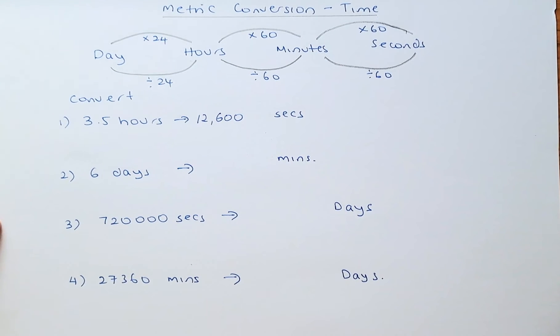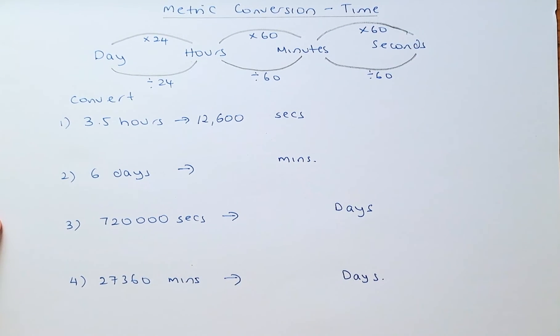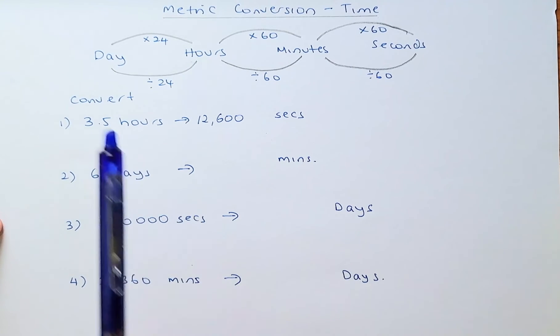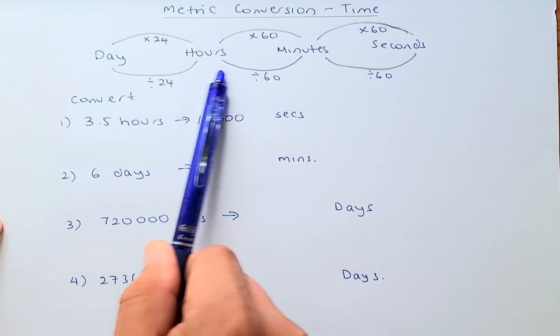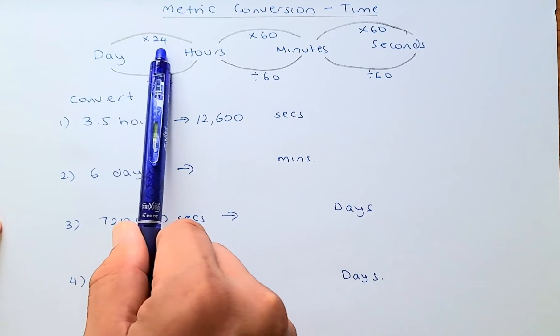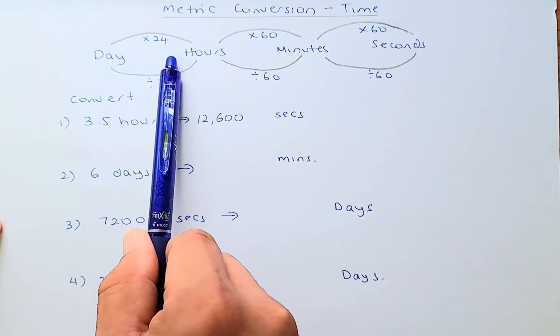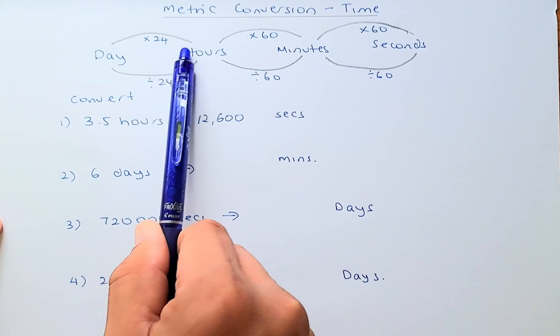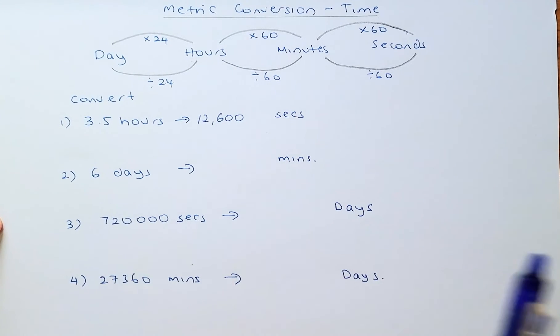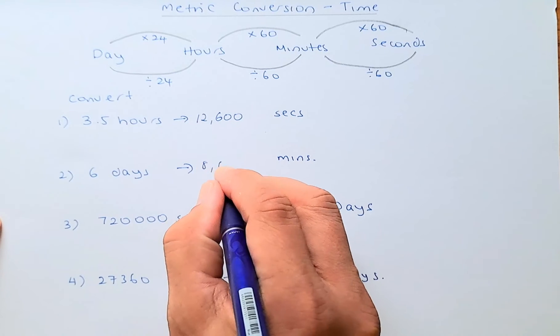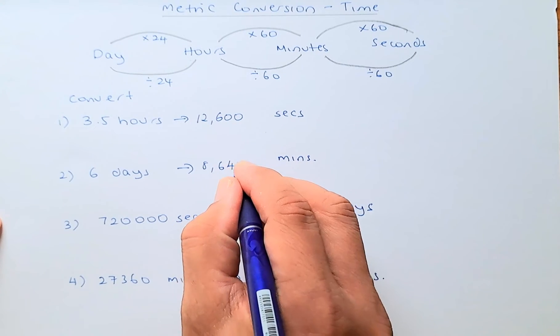Now we do the second example. If we have six days and we want to convert to minutes, we are here and we want to move over there. So what do you do? You multiply 6 days by 24 and then you multiply by 60. So you take 6 times 24 times 60 and the answer comes up to 8,640 minutes.